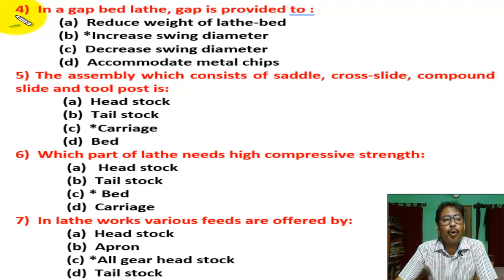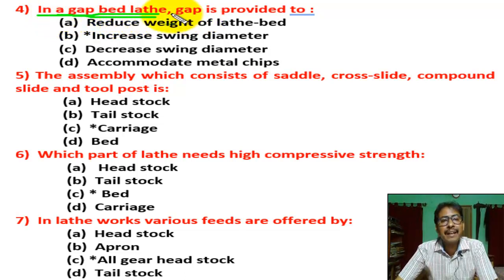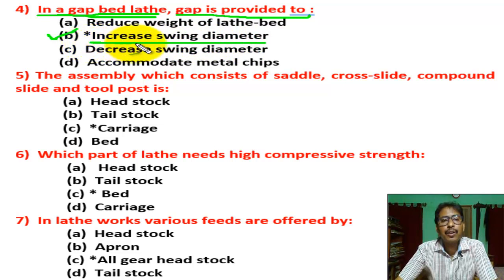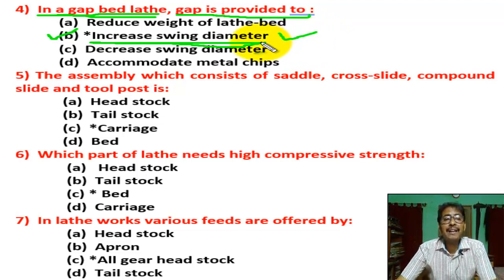Question number four: in a gap bed lathe, the gap is provided to? There are four options. Correct answer is B — increase swing diameter, so that a larger diameter job can be done easily.